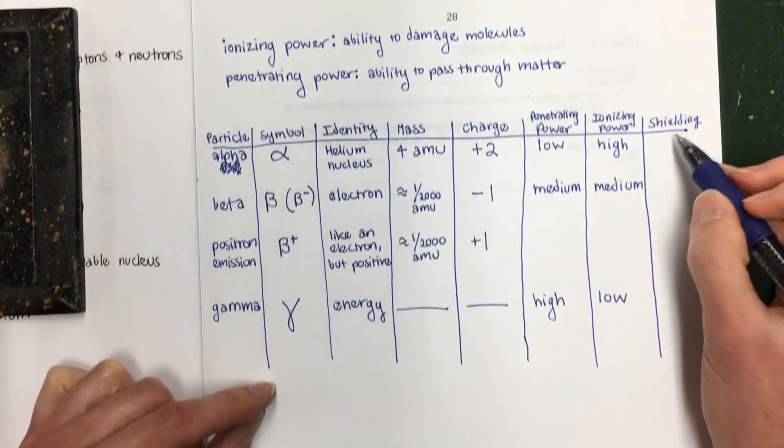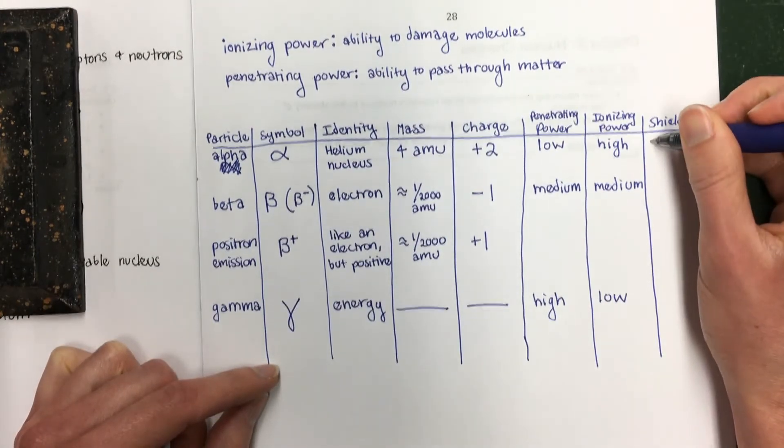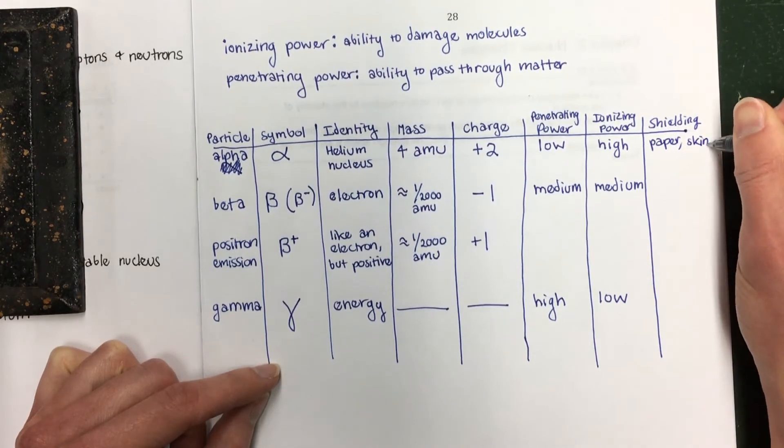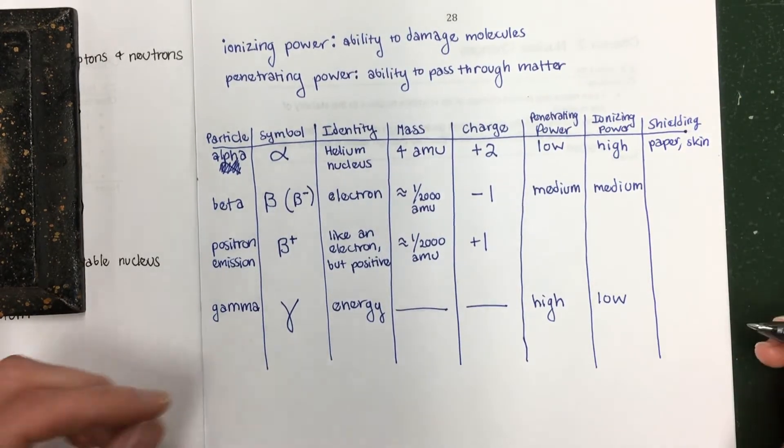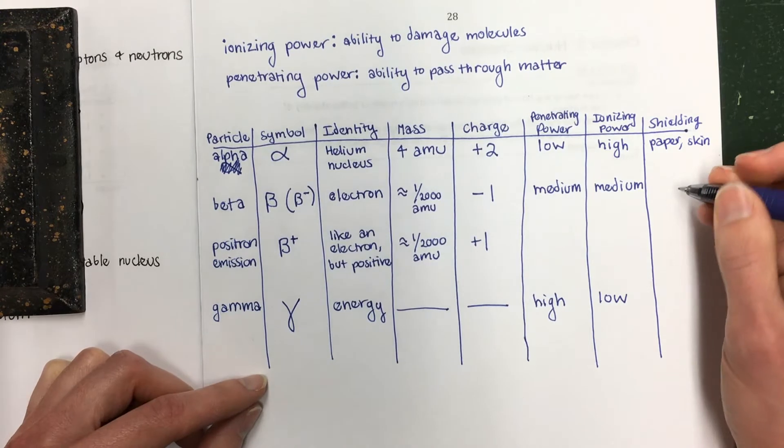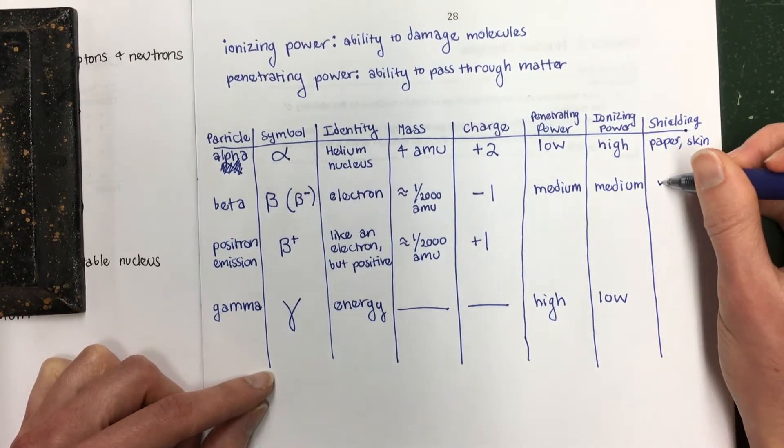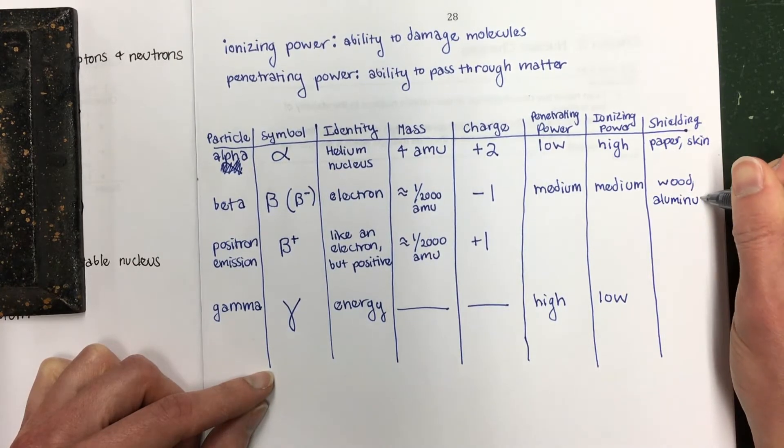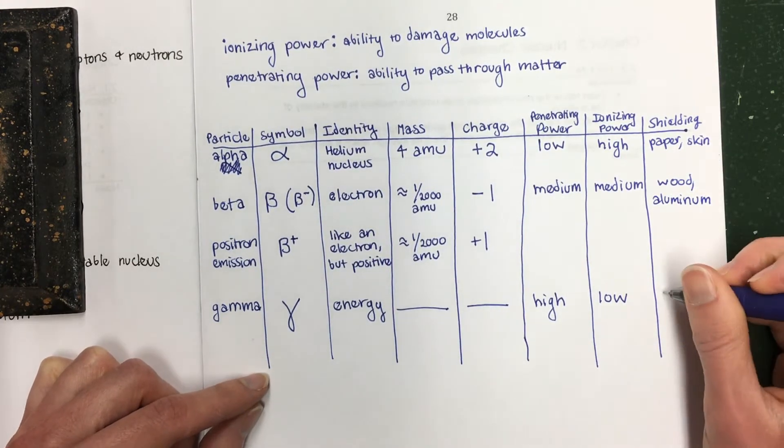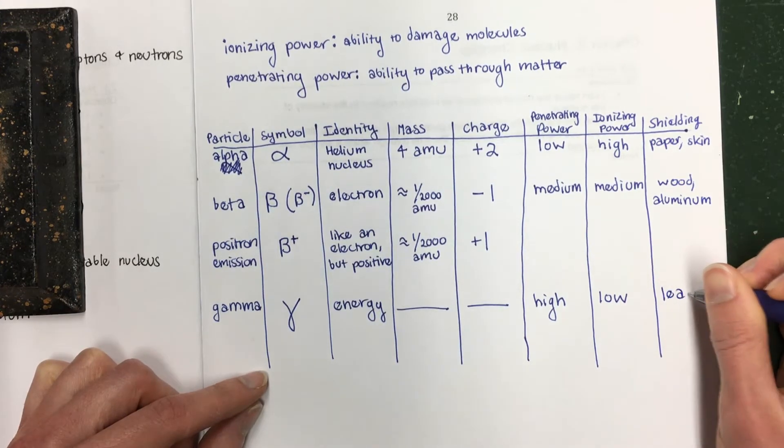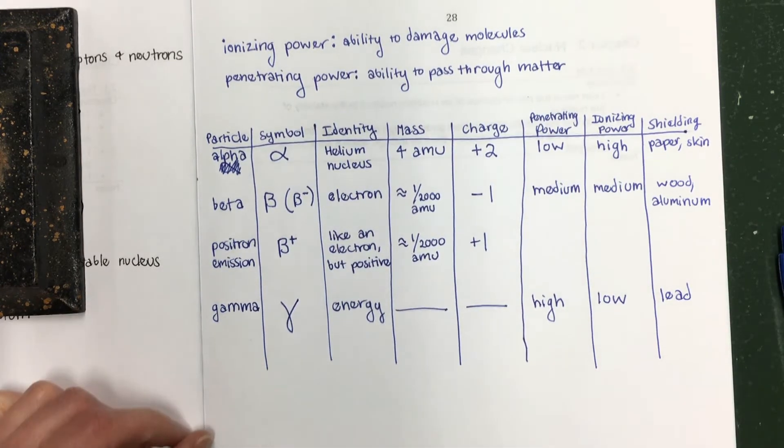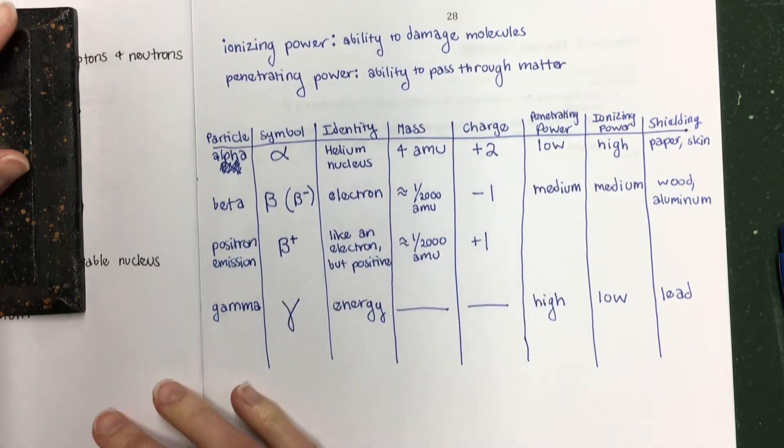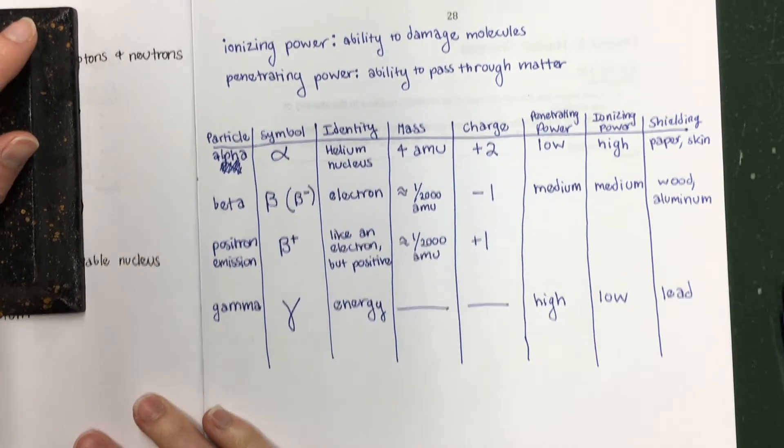Shielding. This is what will block this type of radiation. Alpha is blocked by paper or skin. So it can't get through your skin, although if you breathe it in, it can get into your body. Beta is not blocked by paper or skin, but it is blocked by things like wood or aluminum. And then to block gamma, you need things like lead, like thick pieces of lead too, like a couple inches of lead. So those are the different types of radiation. You need to know about those.